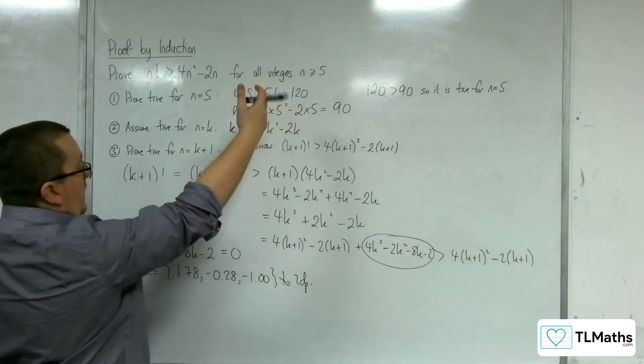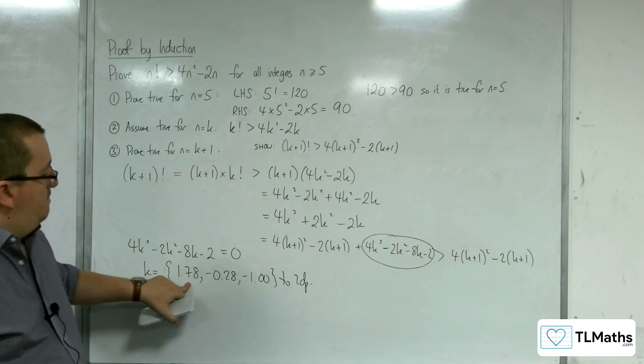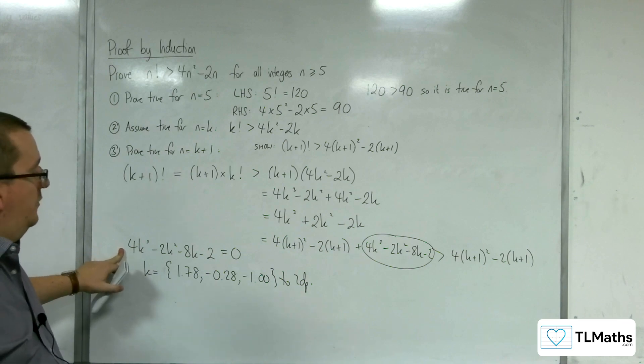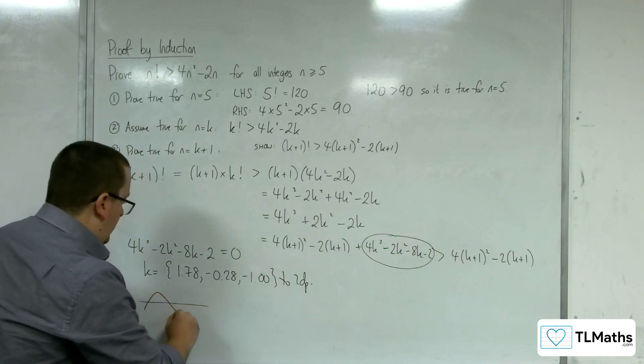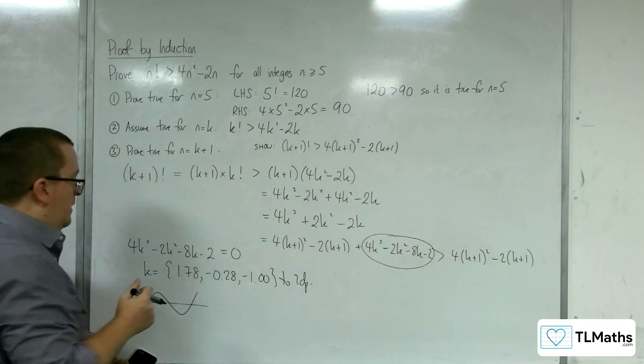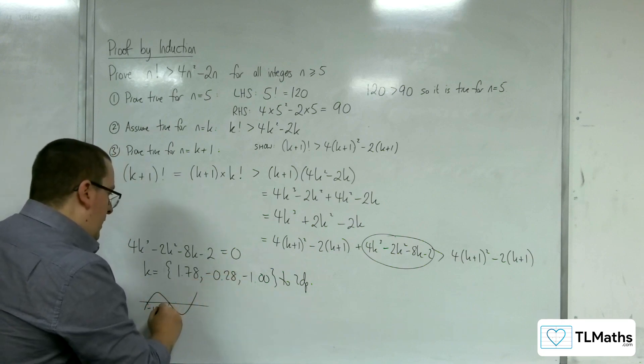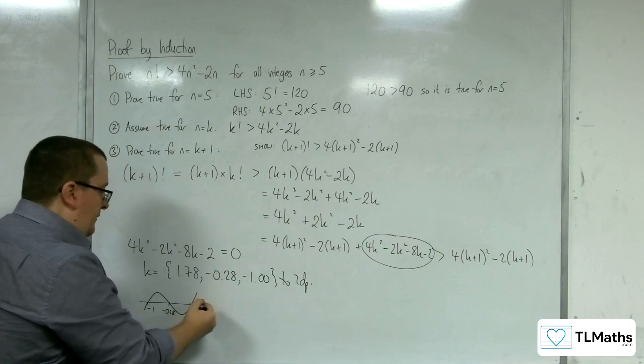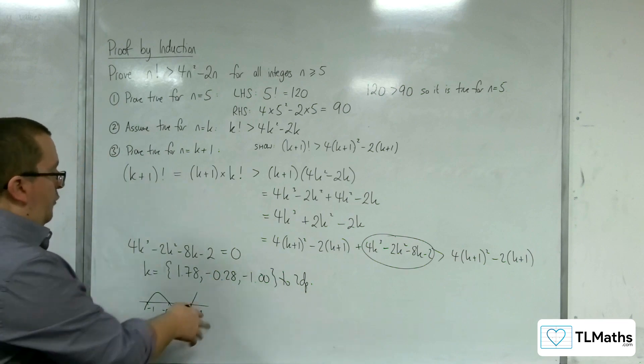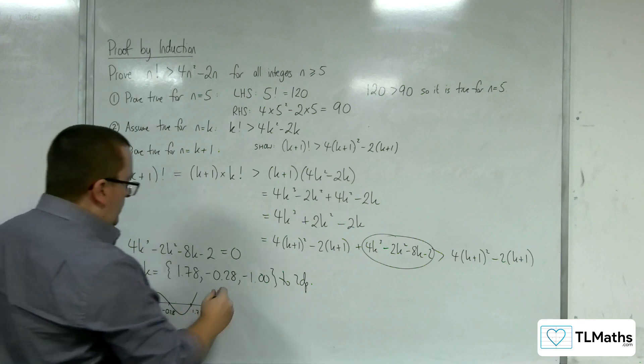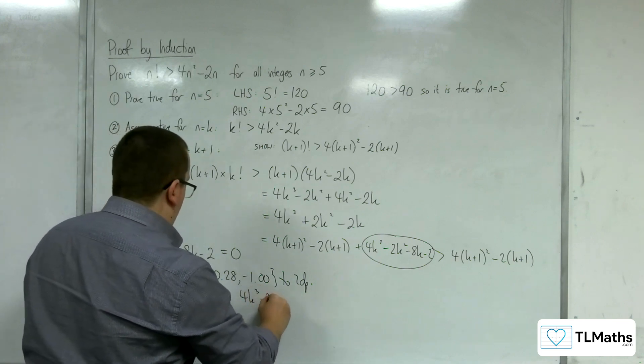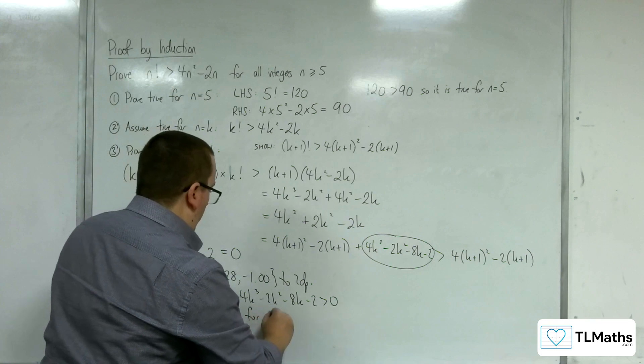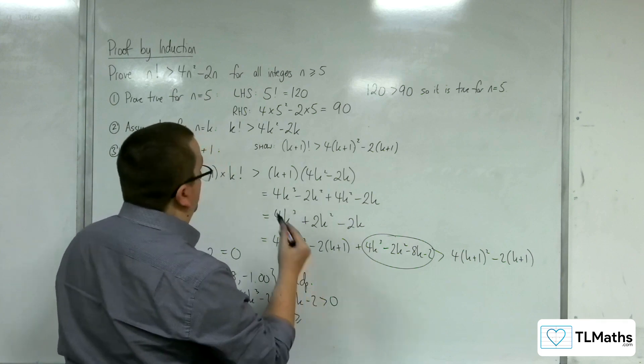Now seeing as we're working with k going to be greater than or equal to 5, this is 0 at 1.78. This is a positive cubic, and it's intersecting the k-axis 3 times, so I've got minus 1 there, minus 0.28 there, and 1.78 there. So the cubic curve is positive and above the axis for any value above that. So 4k cubed minus 2k squared minus 8k minus 2 is greater than 0 for all k greater than or equal to 5.